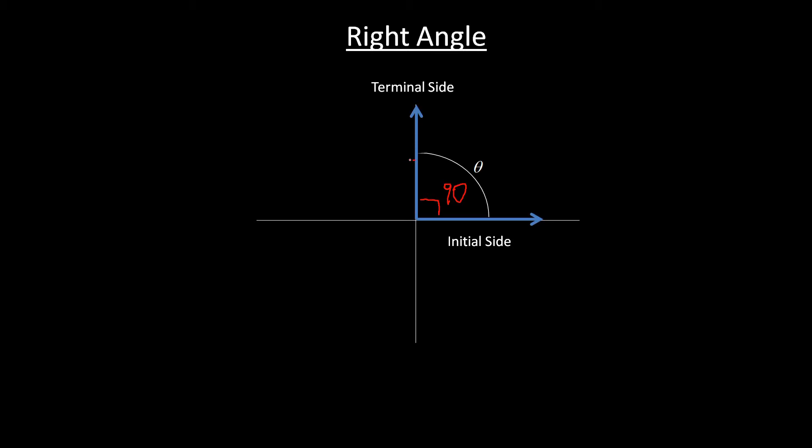And if we keep rotating this some more, between 90 and 180, that's obtuse. And if we keep moving this a little bit more, we get to the straight angle, which is just a line, but that's going through 180 degrees.